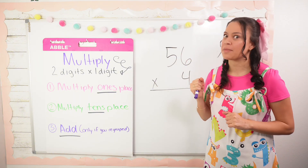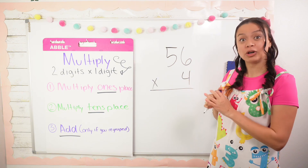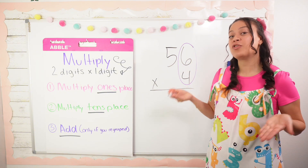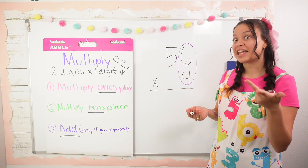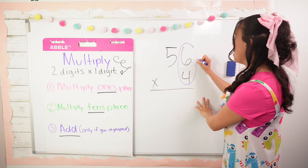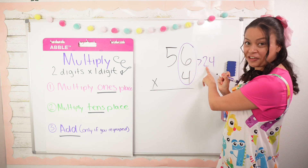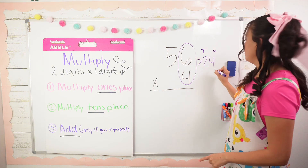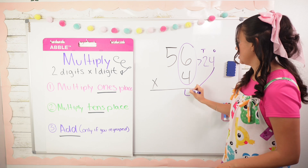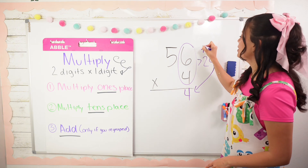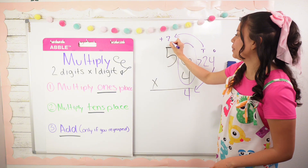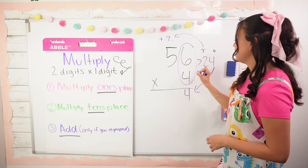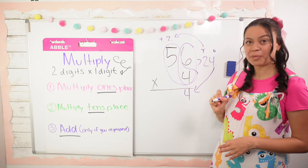Now we have 56 times 4. Step one: multiply the ones place — butterfly wing. 6 times 4 is 24. I'll write 24 to the side. Labeling my place values: ones and tens — the 4 goes down to the ones place and the 2 goes up to the tens place. Don't forget to write a plus sign next to the regrouped digit.